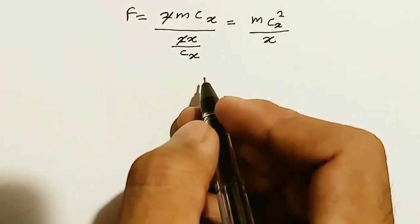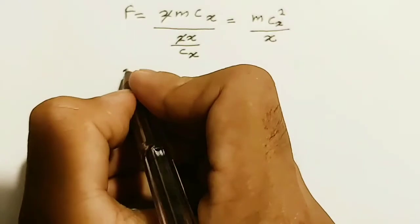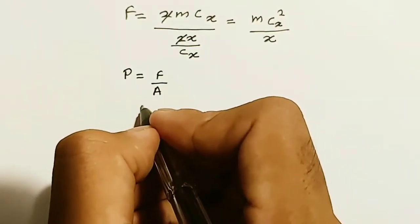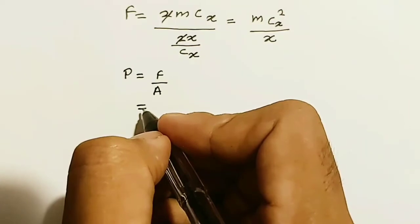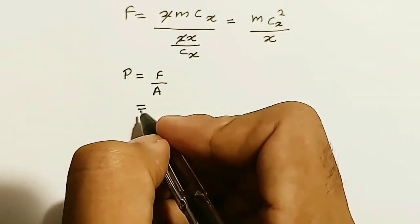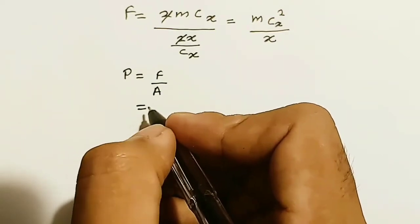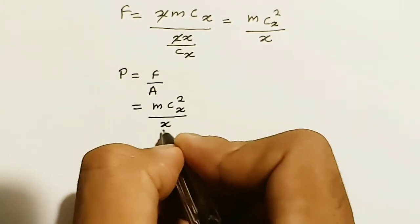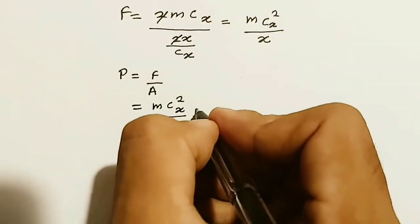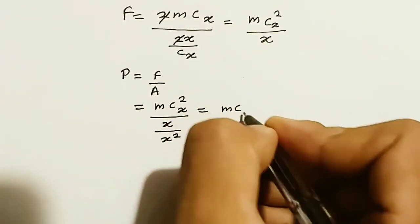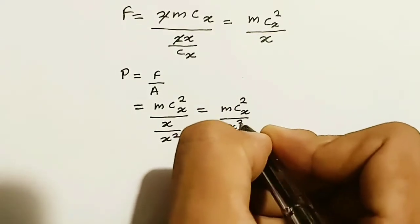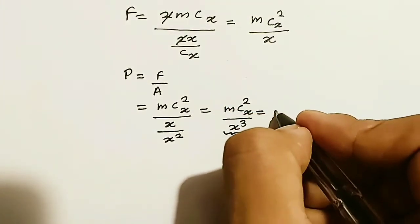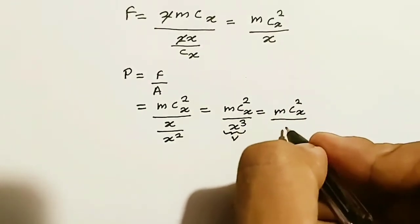After we obtain this particular expression, we know that pressure is also equal to force over area. The pressure exerted by this particle when it collides with the wall is equal to force over area. The area in this situation is always considered to be x squared because this is a cube-shaped box. So the pressure is equal to m times cx squared divided by x, divided by x squared, which equals m times cx squared over x cubed. This x cubed is in fact the volume V. So we can simplify this down to m times cx squared divided by the volume V.